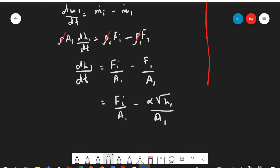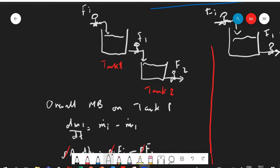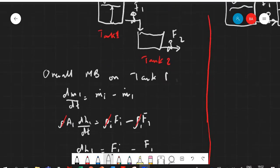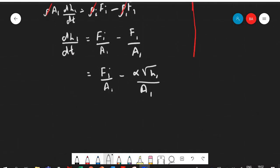Why F1 is equal to α square root of h1? Because F1 here, F1 is a function of the head pressure. The higher the head the more we are going to have pressure to push this liquid or fluid through the pipe and the lower will be the lower the pressure.